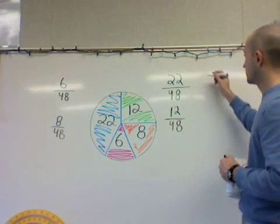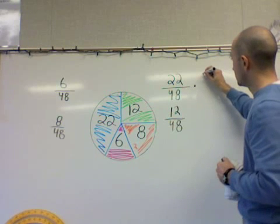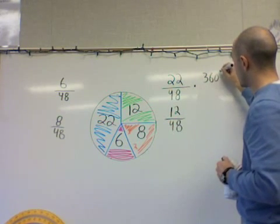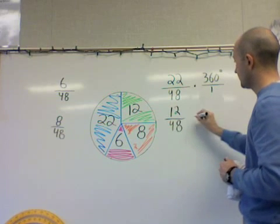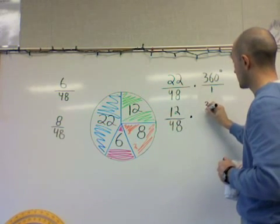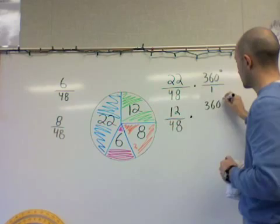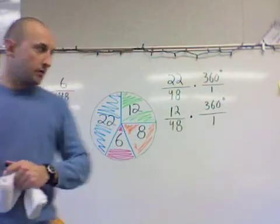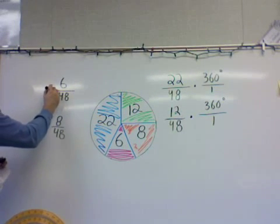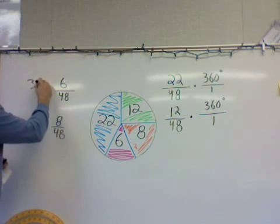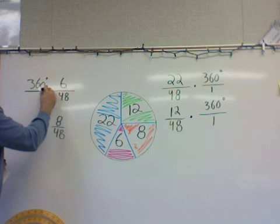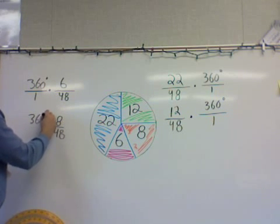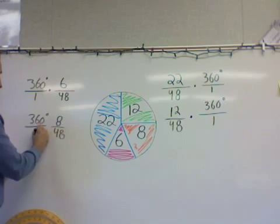So it's going to look like this: each fraction times 360 degrees over one. We set up the same multiplication for each of the four fractions.